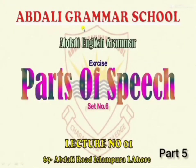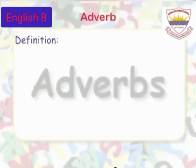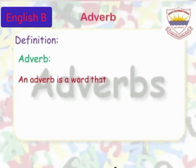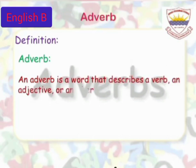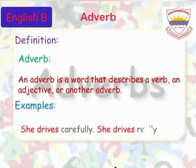Abdali Grammar School, Exercise Parts of Speech, Set 6, Lecture 1, Part 5: Adverb. An adverb is a word that describes a verb, an adjective, or another adverb. Examples: She drives carefully. She drives really well. In these sentences, carefully and really well are adverbs.